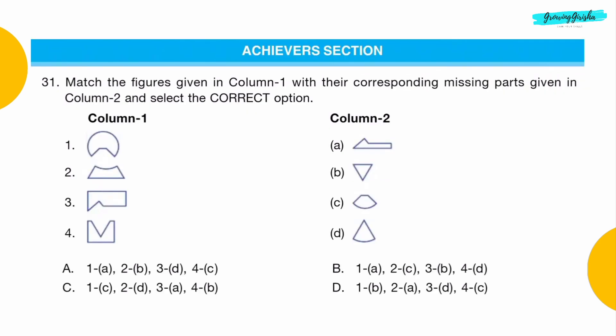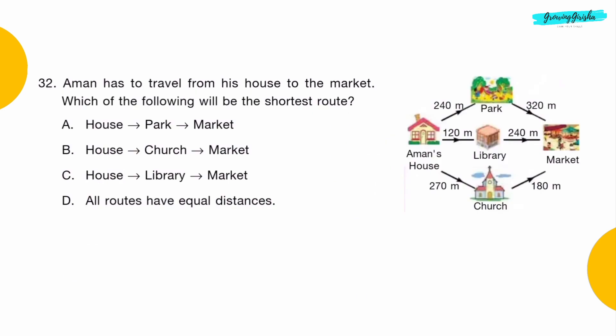Achievers Section Question 31: Match the figures given in column 1 with their corresponding missing parts given in column 2 and select the correct option. Option C.